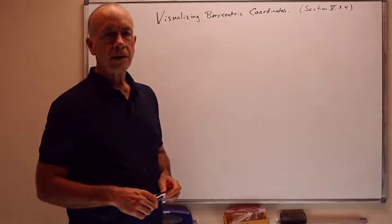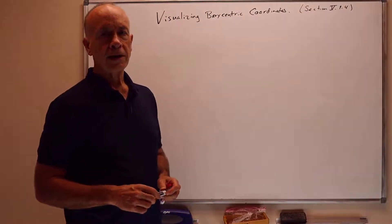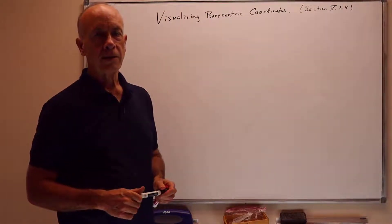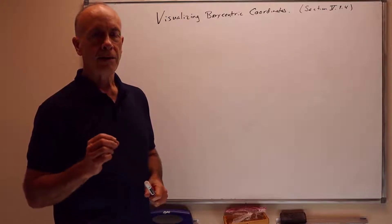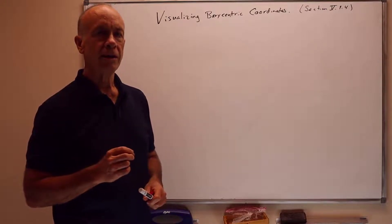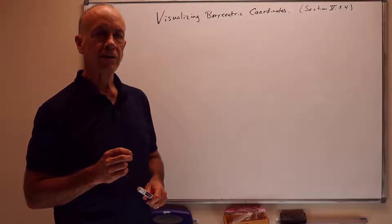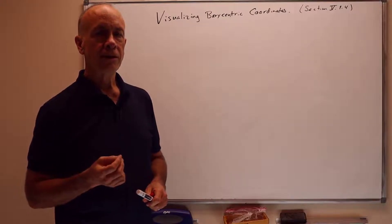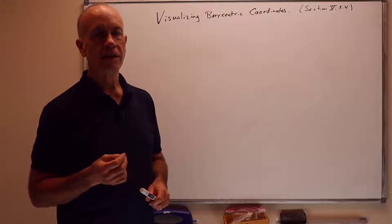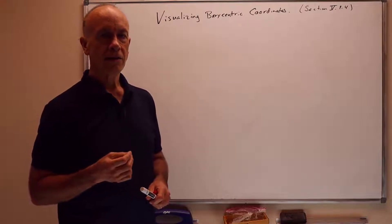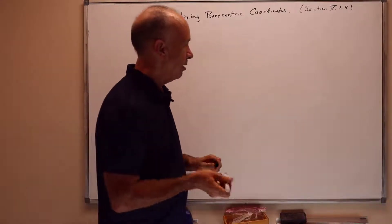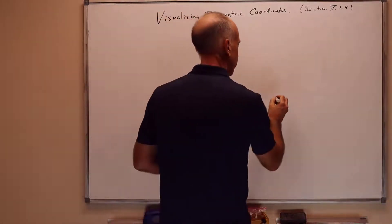Hello, this is the final presentation on barycentric coordinates. We're going to talk about qualitatively visualizing the values of barycentric coordinates — in particular, noticing where the barycentric coordinates alpha, beta, and gamma of a point U are either positive or negative. So let's draw our usual triangle.